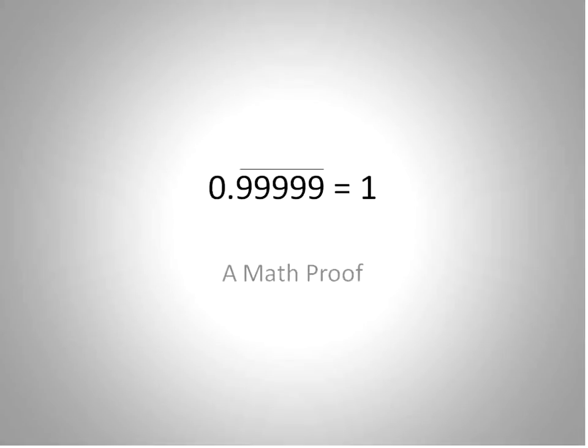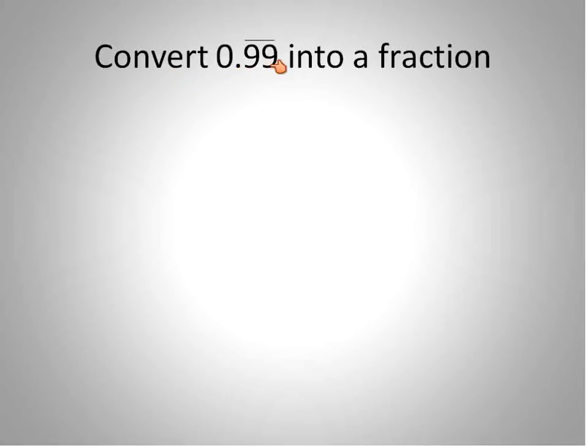We have to understand that 0.999 repeating is a repeating decimal, so it can be written as a fraction. What I'm basically going to do is convert this into a fraction and then take a look at it. So we convert 0.999 repeating into a fraction.